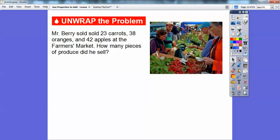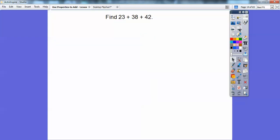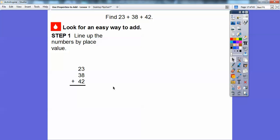Let's try a problem here. Mr. Berry sold 23 carrots, 38 oranges, and 42 apples at the farmer's market. How many pieces of produce did he sell? We're going to find 23 plus 38 plus 42. Let's look for an easier way to add. Let's line up the numbers by place value vertically. Here the ones are lined up and the tens are lined up. The 20 is the tens and the 3 is the ones.